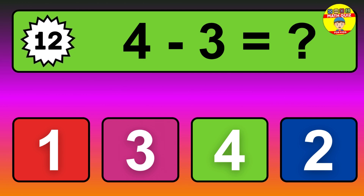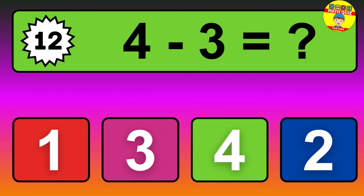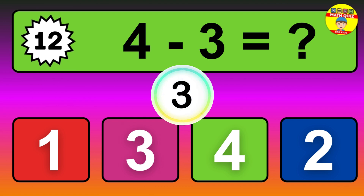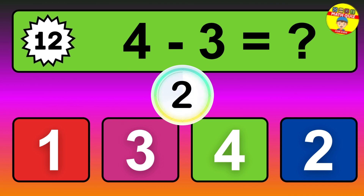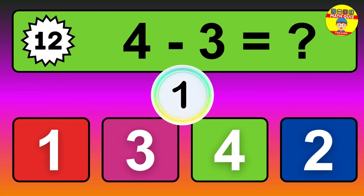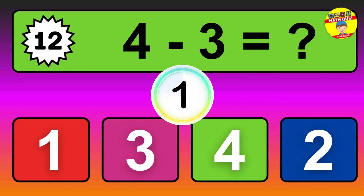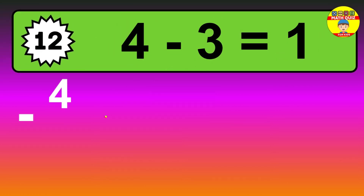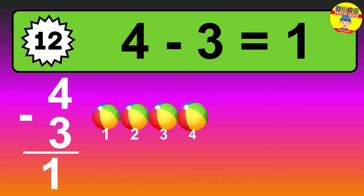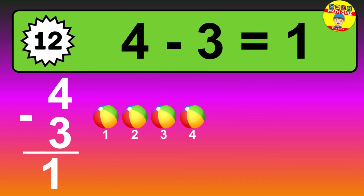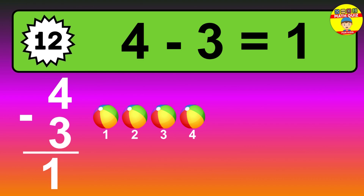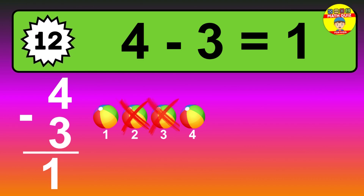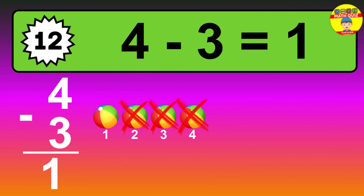Question twelve: four minus three equals what? The answer is four minus three is one. Let's count it: one.